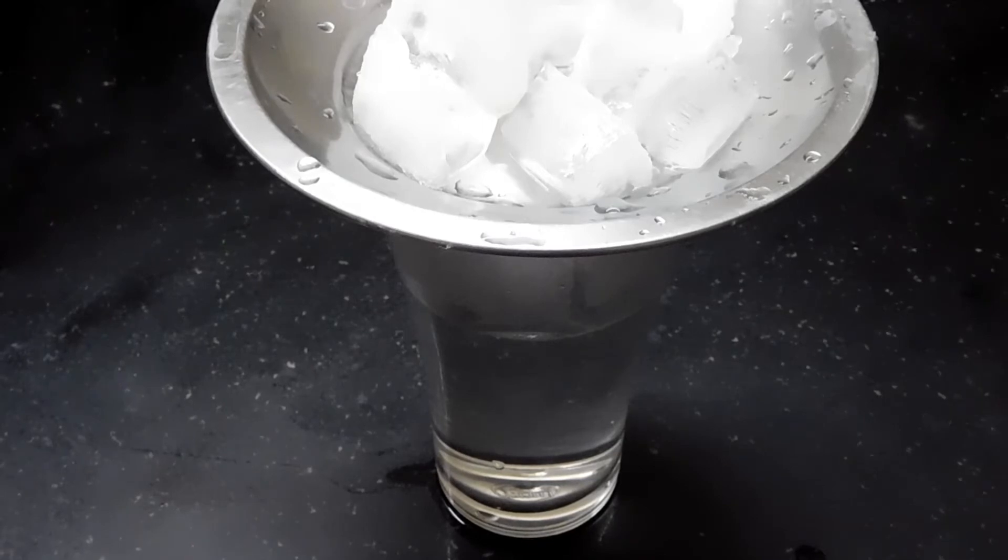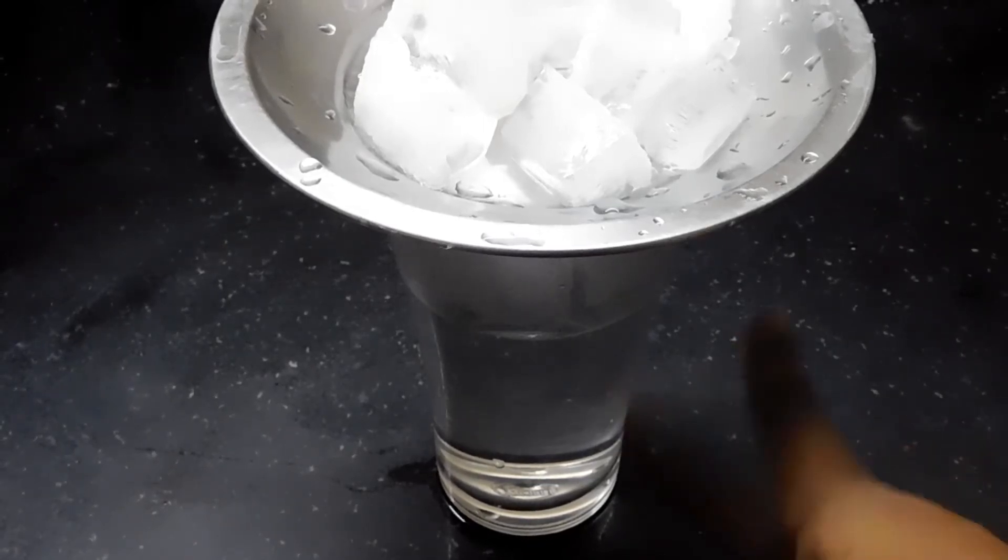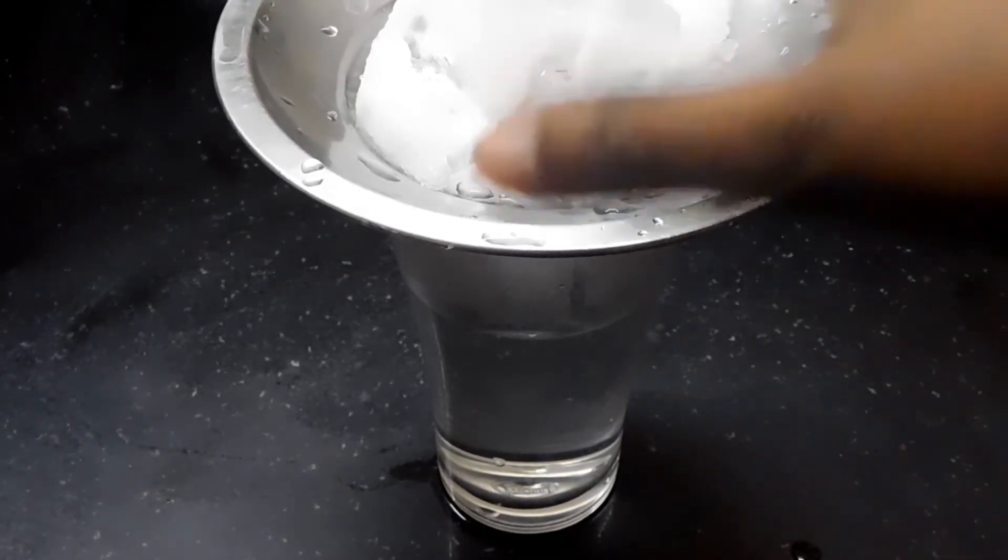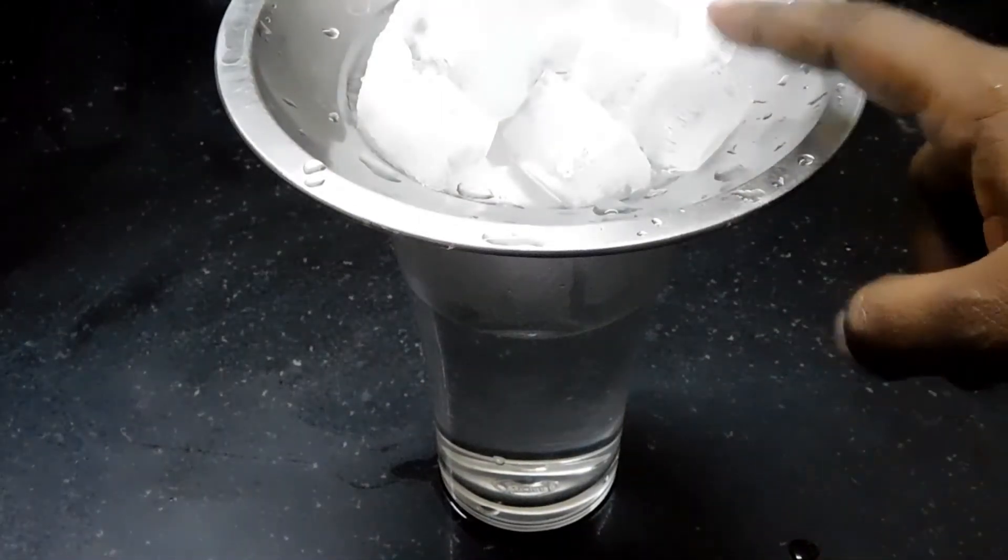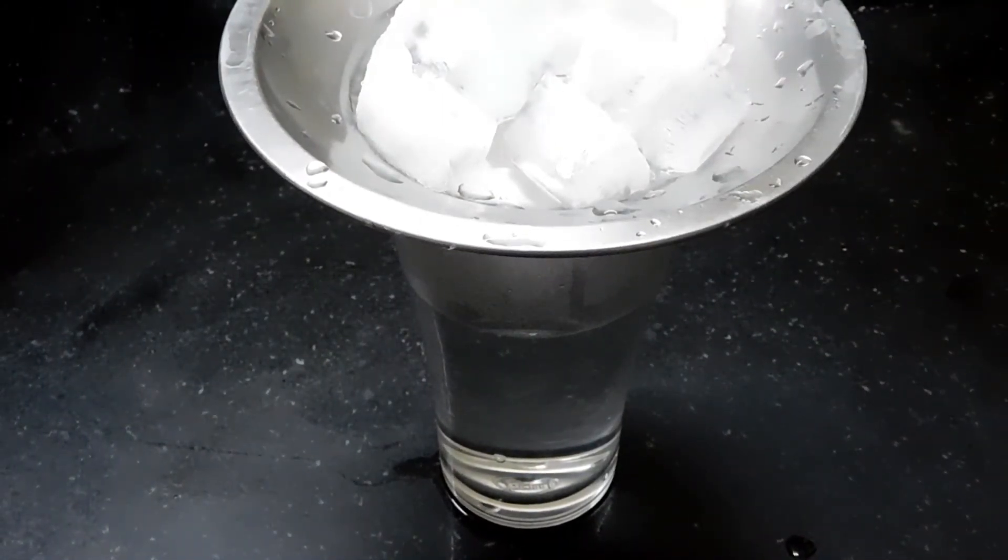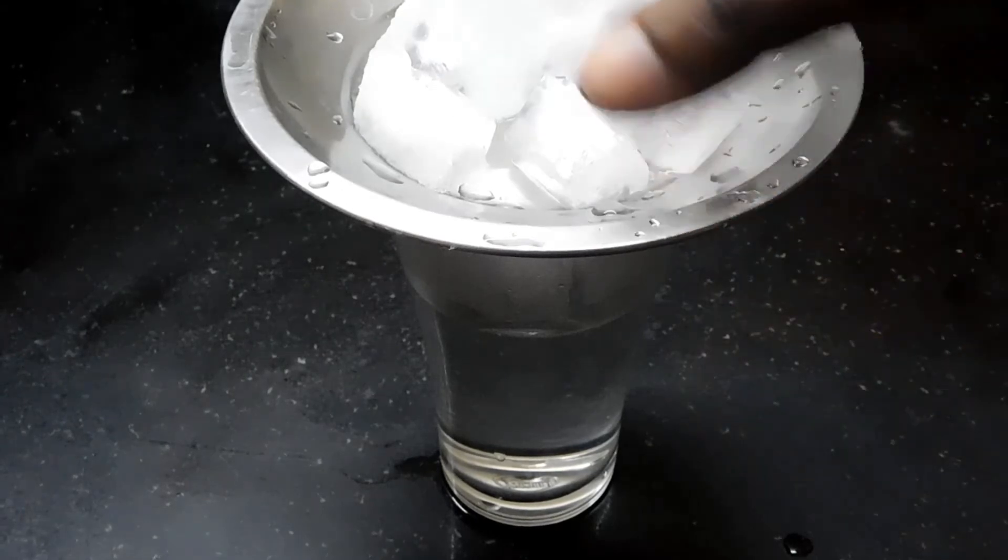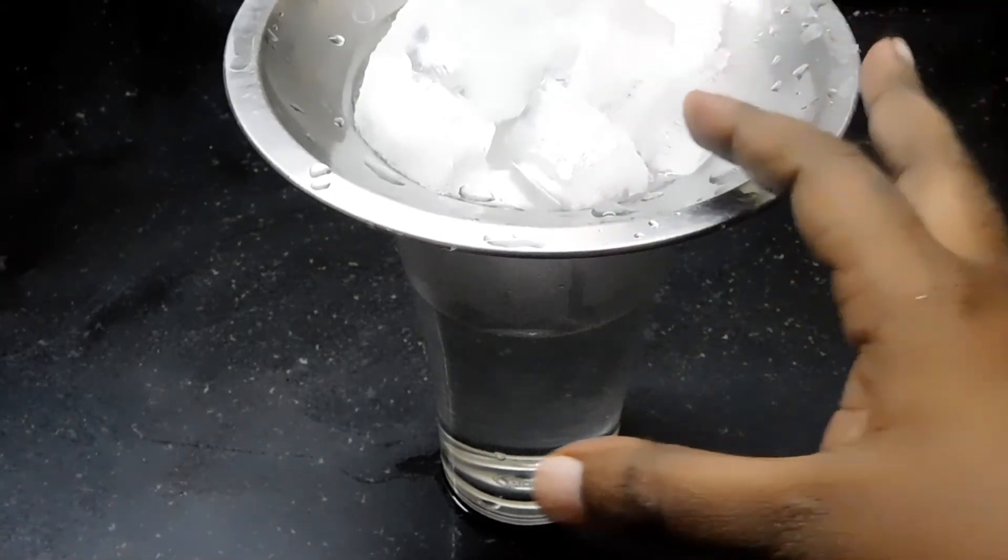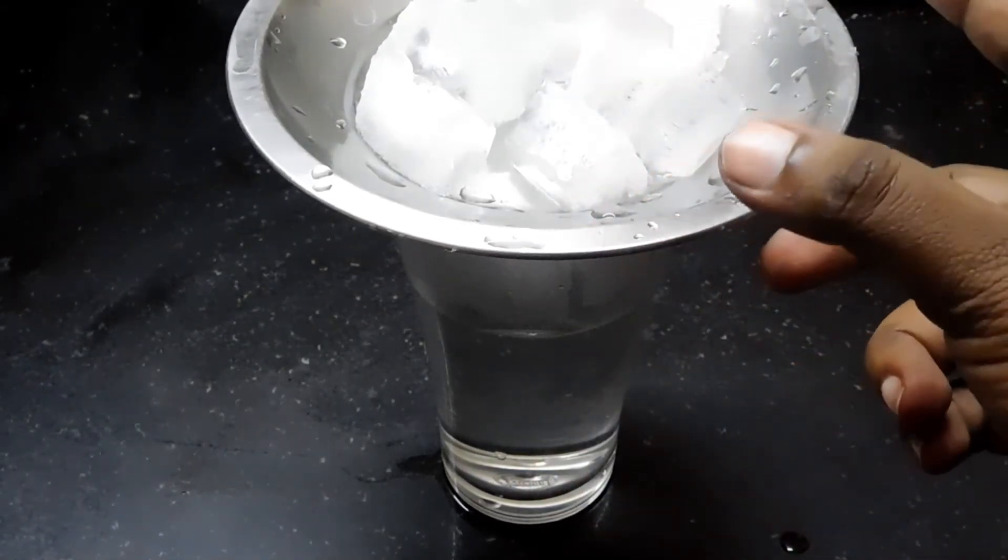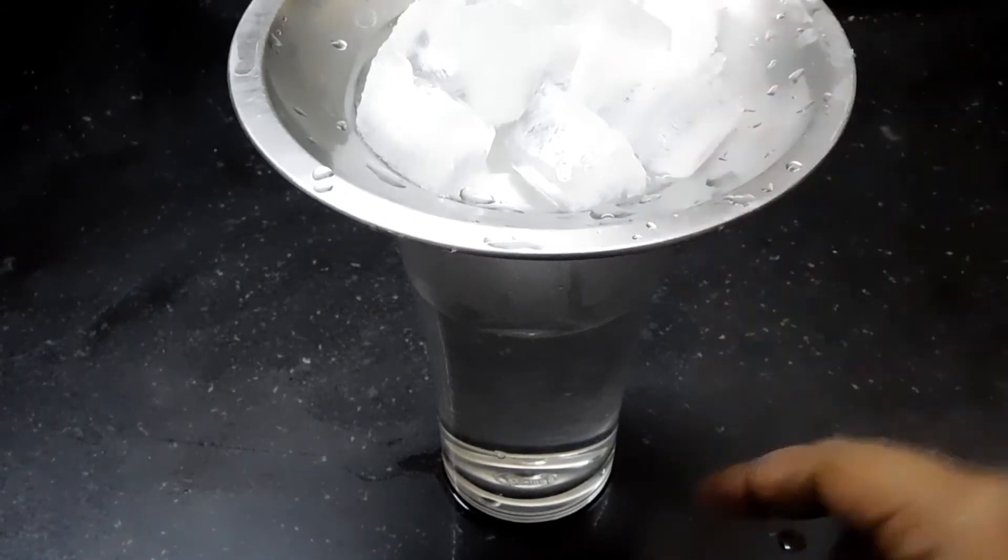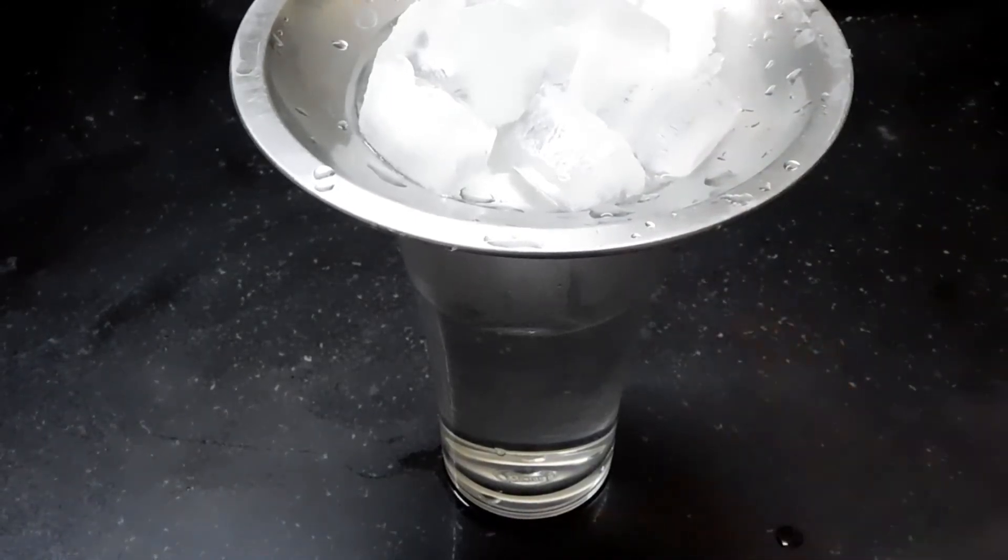So pour some piping hot water into this glass jar and you can cover it with a plate and put some ice cubes on it. So what happens, the cold plate causes some moisture which starts the condensation process inside the jar and forms water droplets.